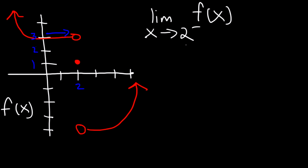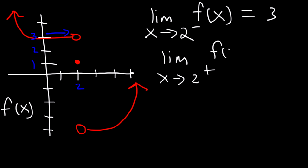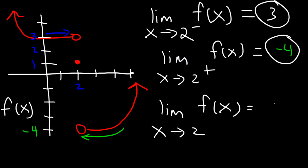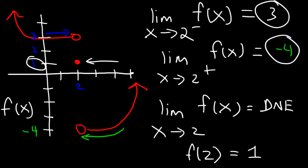What is the limit as x approaches 2 from the right side of f of x? Following the curve from the right side as we approach x equals 2, the y value is negative 4. Because the left side and the right side do not match, the limit does not exist. When x is exactly 2, we look at the closed circle — the y value is 1, so f of 2 is equal to 1.